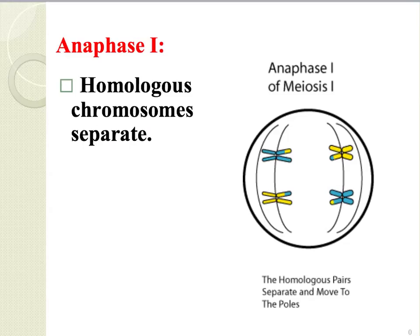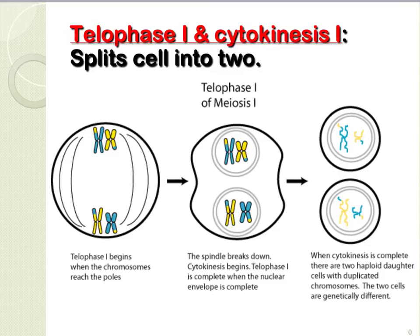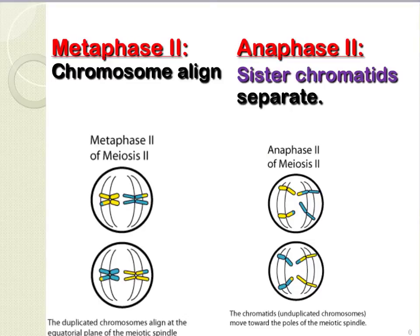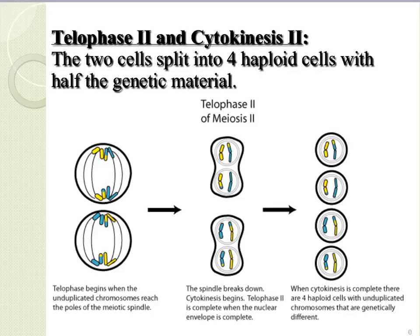During anaphase I, we have homologous chromosomes being separated. During telophase I and cytokinesis, the cell splits into two. Prophase II is a short phase where the nuclear envelope breaks apart. It is followed by metaphase II where chromosomes align, and anaphase II where sister chromatids separate. Telophase II and cytokinesis II will result in two cells splitting up into four haploid cells with half the genetic material from the original cell.